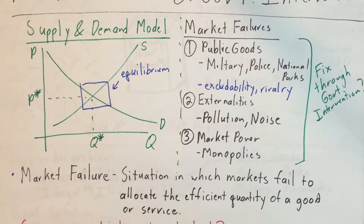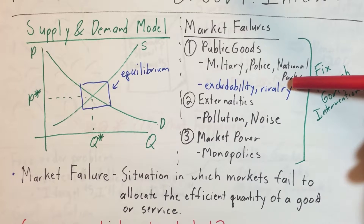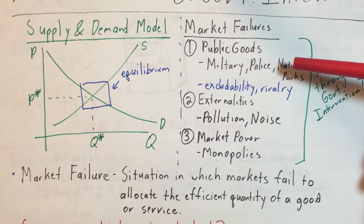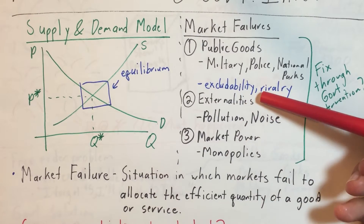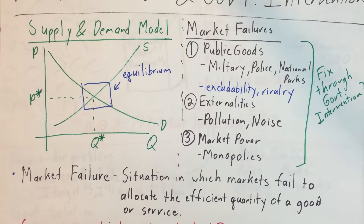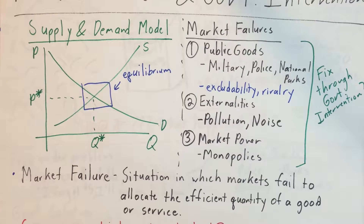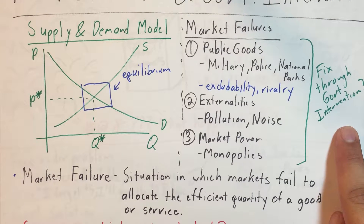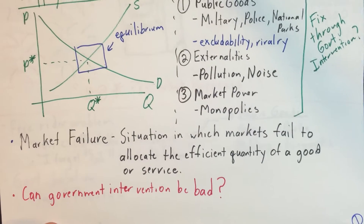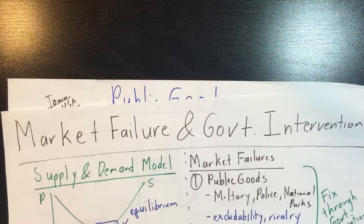We're going to talk about three cases where this happens. First, public goods — things like military, police, and national parks — where excludability and rivalry come into play. Second, externalities — things like pollution and noise, products of a market interaction that affect a third party. Third, market power and monopolies — how they create market failures and inefficiency. We'll also discuss whether government interventions can be bad or even worse than the market failure itself.